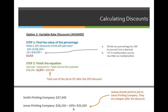When we bring it down and compare the price from Smith and Jones Printing Companies, Jones Printing Company is lower. So the correct answer for this problem is $25,335 — he should send it to Jones Printing Company, and he will pay $25,335.